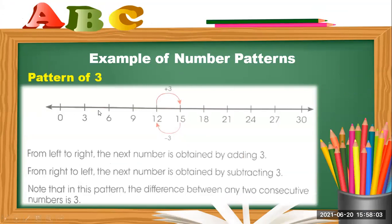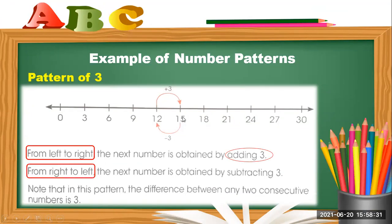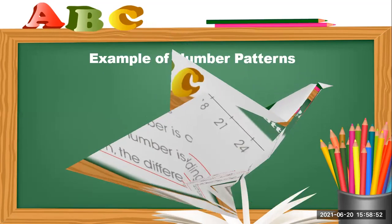For example, the pattern of three. As you can see here on the number line, you can see 0, 3, 6, 9. It's counting forward or increasing — from left to right, the next number is obtained by adding 3, so the next number is 15. From right to left, the next number is obtained by subtracting 3, or minus 3. Note that in this pattern, the difference between any two consecutive numbers is 3.